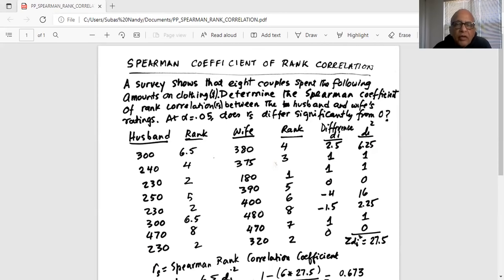Similarly, we rank the wife's spending separately. The lowest is 180 which gets a rank of one. Next is 320 gets a rank of two. Next one is 375 gets a rank of three for the wife and so forth. Then we find the difference in the corresponding ranks between husband and wife.